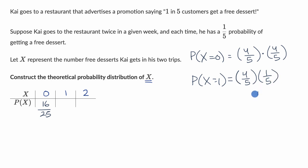But then of course, there's the other scenario where on day one, he gets the dessert, and then on day two, he doesn't get the dessert. These are the two scenarios where he's going to get X equals one.